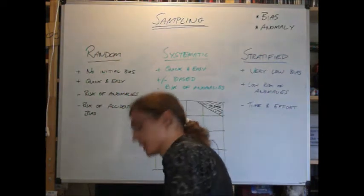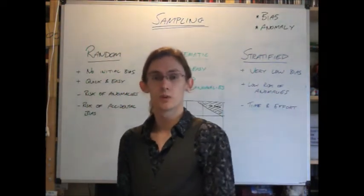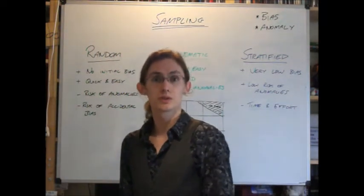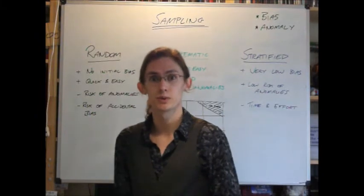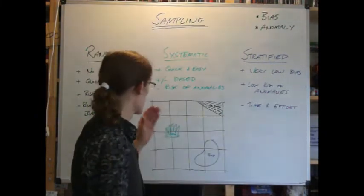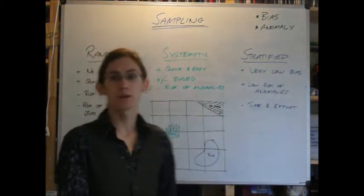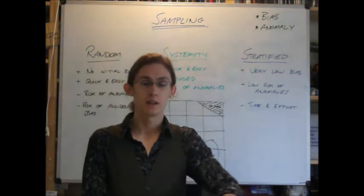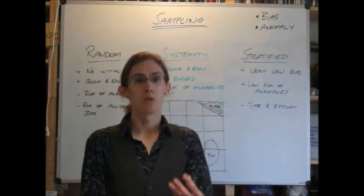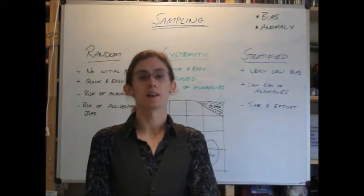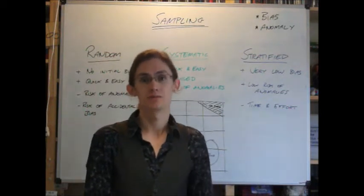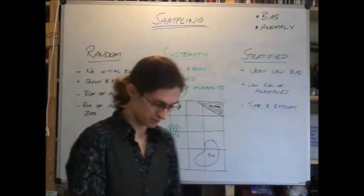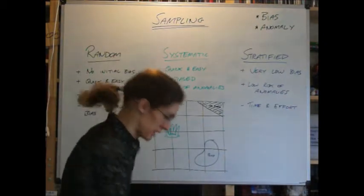So if we are to sample, we need to consider our random, systematic and stratified samples. And I'm going to use the example of an area of land and we're going to be investigating what the soil type is like in each specific part of the land. Let's start with random sampling.